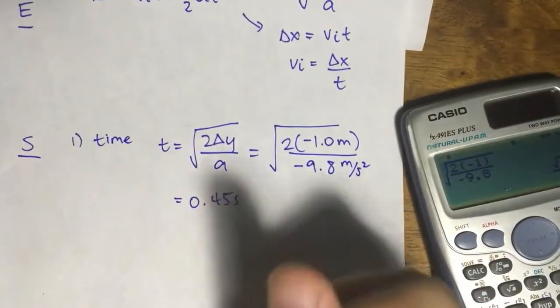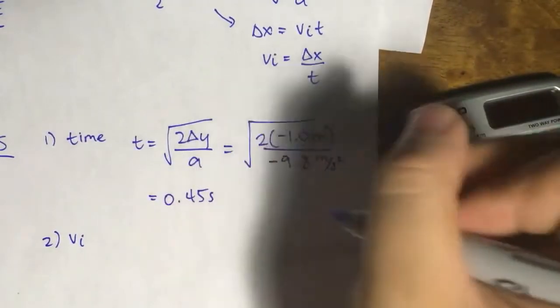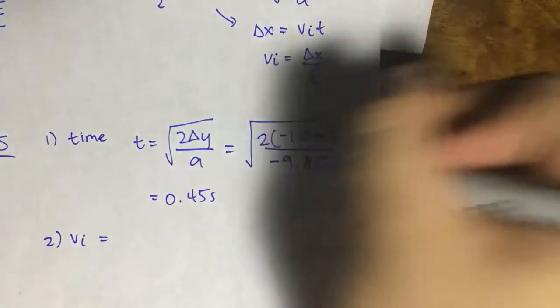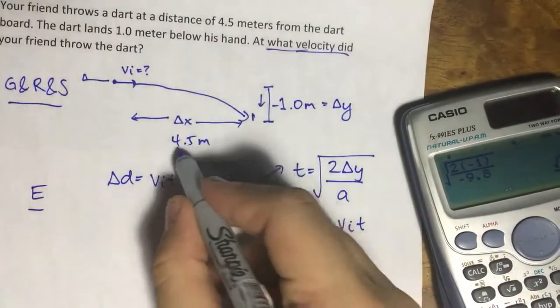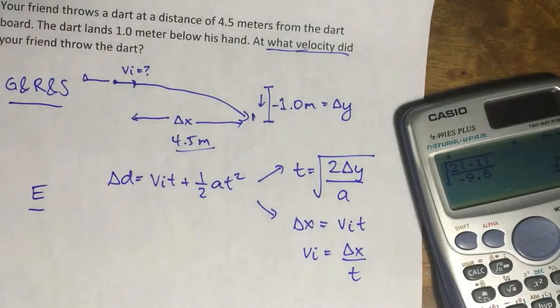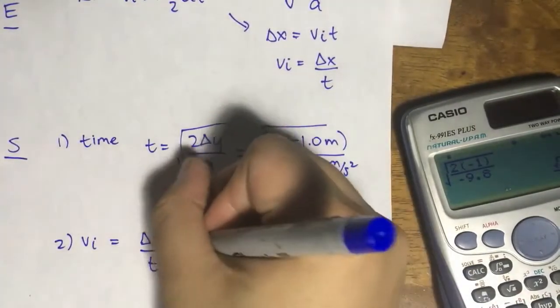Now, in order to get what we're looking for, vi, let's use the second equation. Vi is equal to delta x over t. Delta x is 4.5 meters, t is 0.45 seconds.